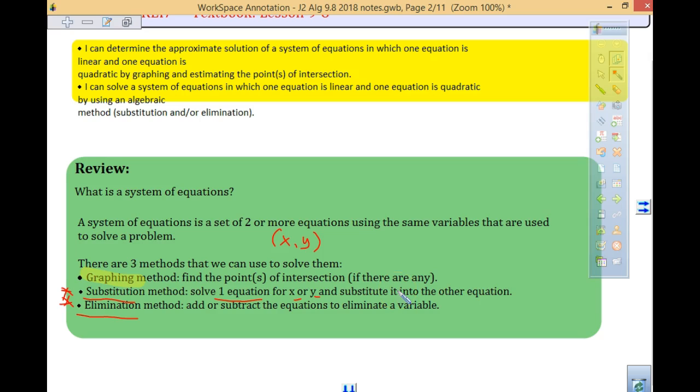Elimination is when you add the two equations and something cancels. In our case, it's almost always going to be the y that cancels. We're going to multiply by either negative one because slope intercept is y equals mx plus b, and quadratic is y equals ax squared plus bx plus c.